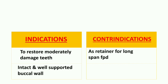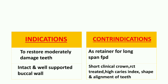Contraindications: first is as a retainer for long-span FPD — if a longer FPD is required, partial coverage retainers cannot be used. Second is short clinical crown, RCT-treated tooth, high caries index, and unfavorable shape and alignment. Short crowns or already weakened RCT-treated teeth need full coverage. High caries index patients are contraindicated as restoration failure would require repeating the entire process.